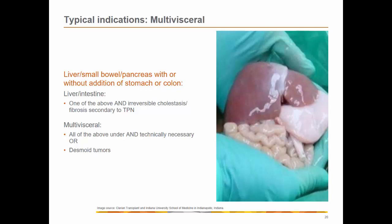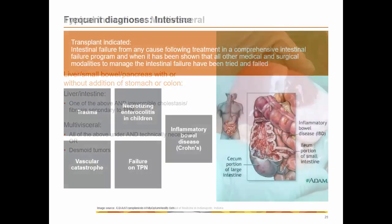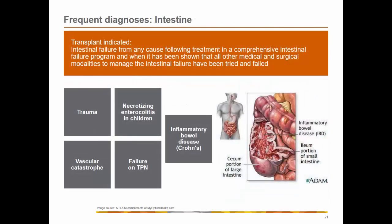Multivisceral transplantation is indicated for irreversible cholestatic fibrosis secondary to TPN or when a tumor is present. Frequent diagnoses associated with intestinal failure include traumatic perforation, Crohn's disease, necrotizing enterocolitis in children after ischemic processes with superimposed bacterial infection in neonates, and ischemic or vasculitic processes producing edema and capillary permeability at the level of the intestine with superimposed infection.